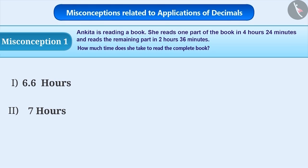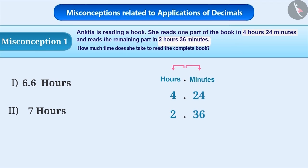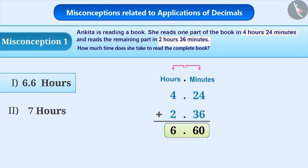Sometimes, while representing time in decimal numbers, hours are written before the decimal point and minutes are written after the decimal point. So, 4 hours and 24 minutes is represented as 4.24 hours and 2 hours and 36 minutes is represented as 2.36 hours. Then, by adding these two, 6.60 hours is obtained as the result.